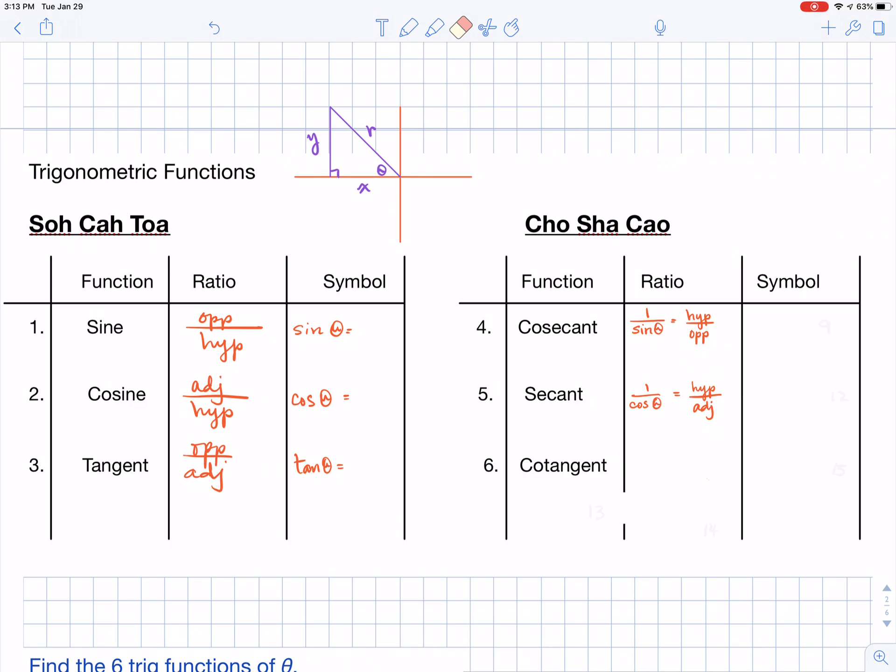And then cotangent, you guessed it, is the reciprocal of tangent, which is going to be adjacent divided by opposite.